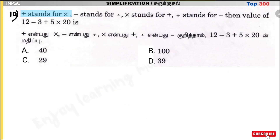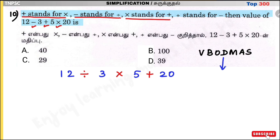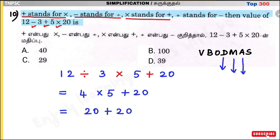Question number 10. Plus stands for multiplication, minus stands for division, into (×) stands for plus, and division stands for minus. Find the value of 12 minus 3 plus 5 into 20. Replacing: 12 ÷ 3 × 5 + 20. Apply BODMAS — first division: 12 ÷ 3 = 4. Then multiplication: 4 × 5 = 20. Then addition: 20 + 20 = 40. Answer is Option A: 40.